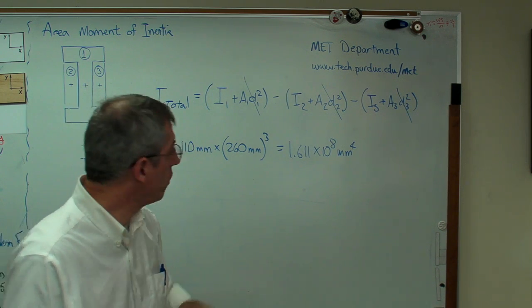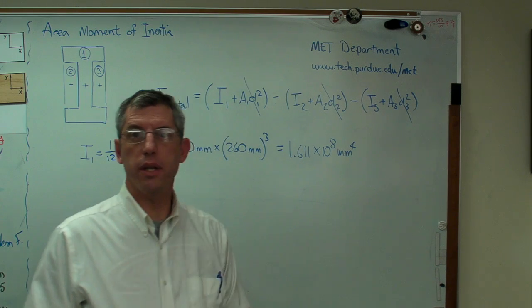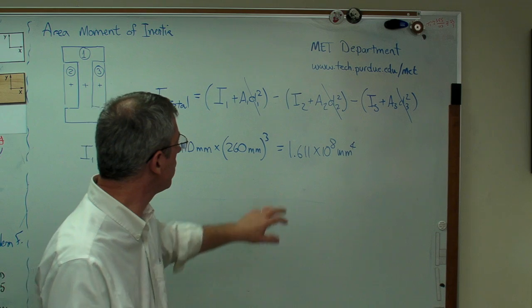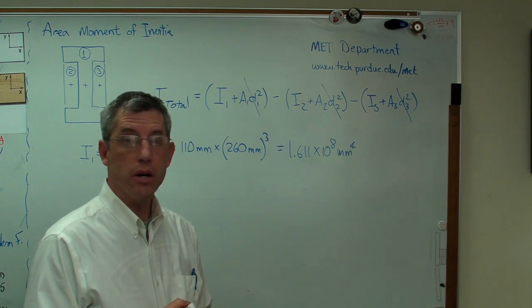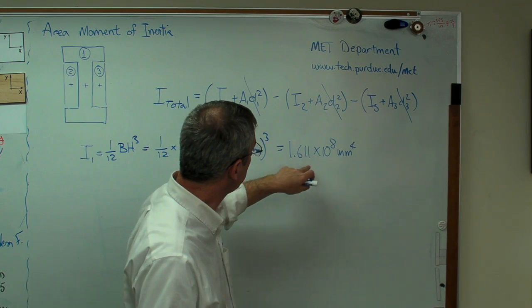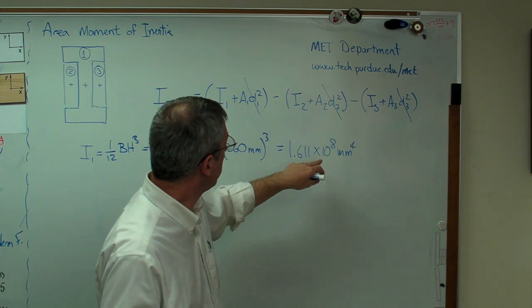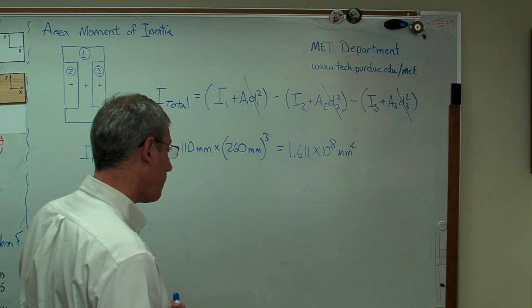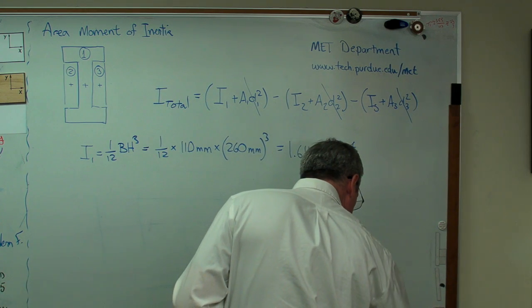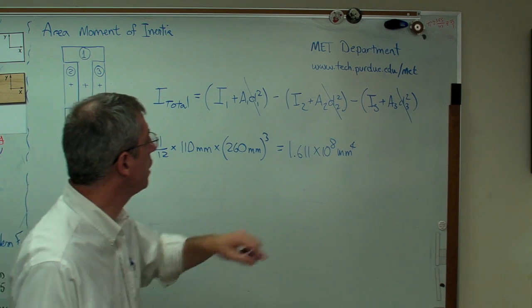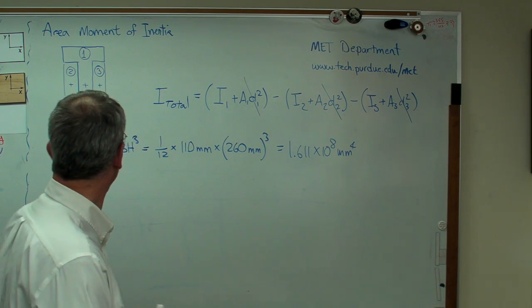The reason that number is so big is we're dealing with millimeters to the fourth. A millimeter is only about that big. If we were to do this in meters, we would get 10 to the minus 12 times that, because a meter is about that big and it's 1,000 times different than a millimeter. 10 to the 12th difference.